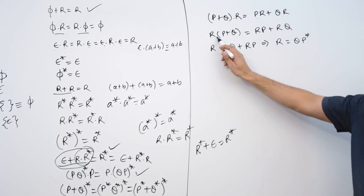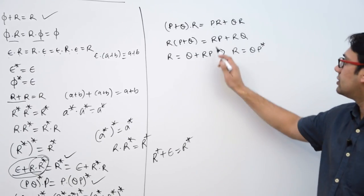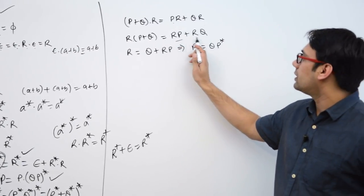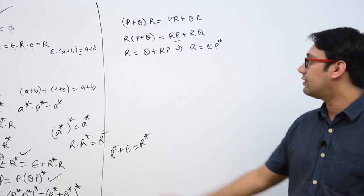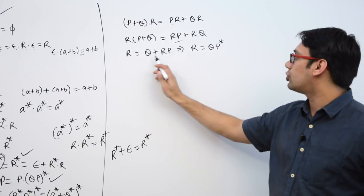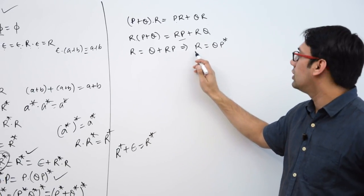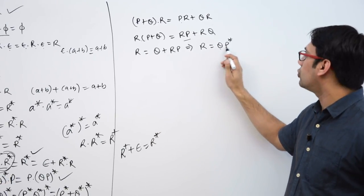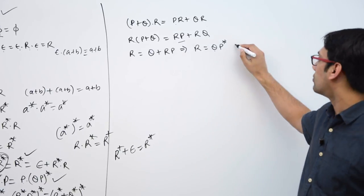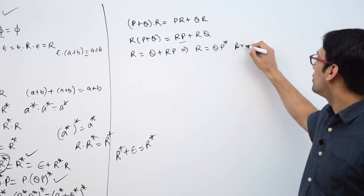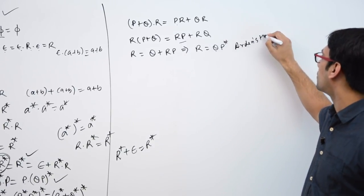When we have r dot (p plus q), then this is equal to rp plus rq. When we have r equal to q plus r·p, then this can be written as q·p*. This is called Arden's theorem.